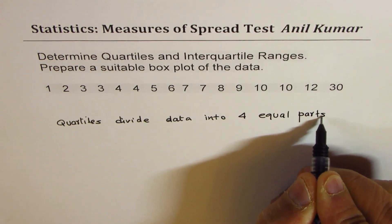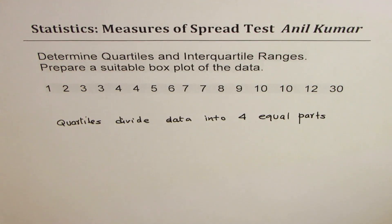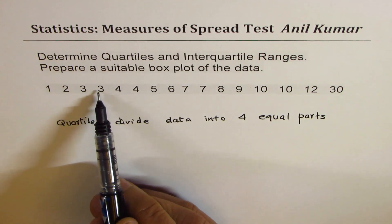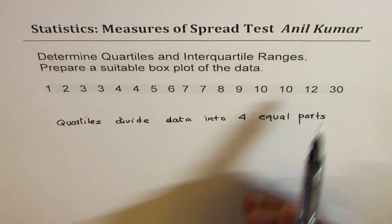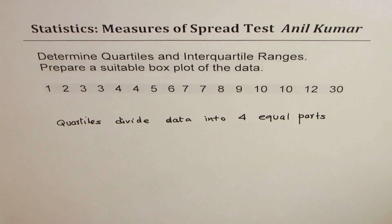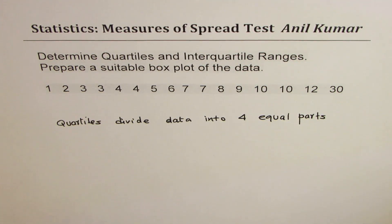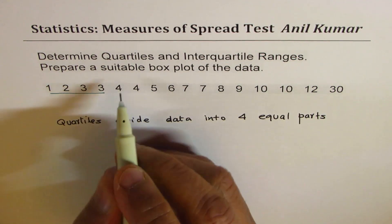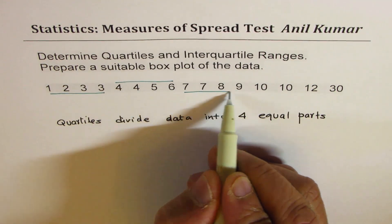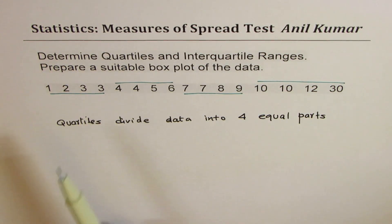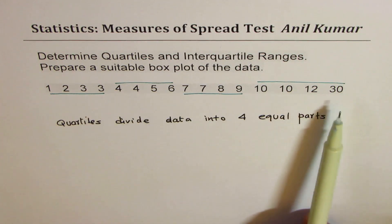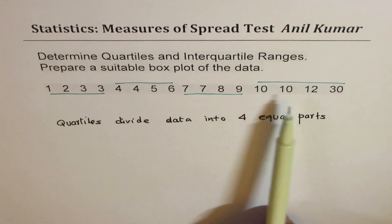That is basic. So how many elements do we have? Counting them: 1 through 16 — we have 16 elements. So if I divide 16 into 4 equal groups, how many do I get in each? Easy to see — 4 in each. So you have groups of 4: the first four elements, the next four, the next four, and the last four. You have to divide the complete data into 4 equal groups.